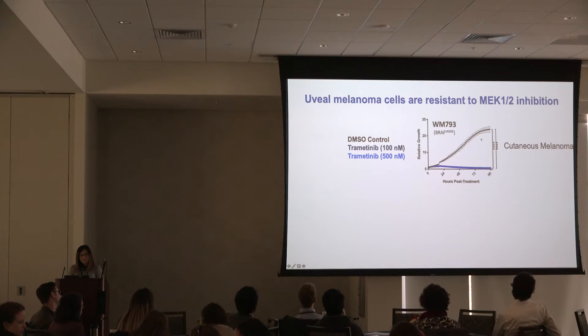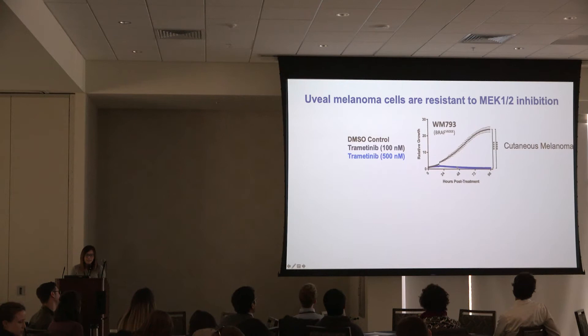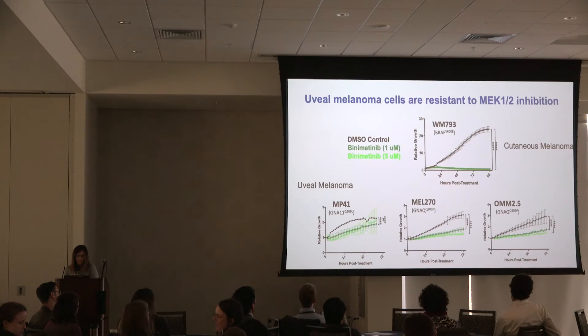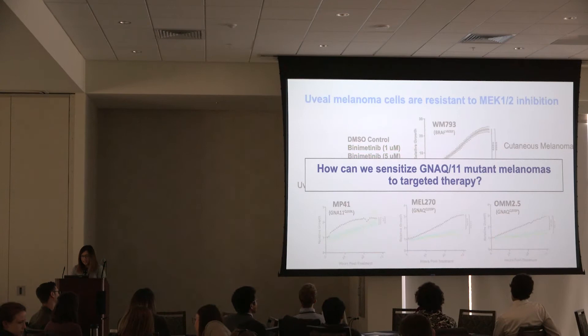These are results from a live cell imaging experiment looking at cell confluence over time. A BRAF-mutated cutaneous melanoma cell line is very sensitive to trametinib — the cells are not growing, confirming sensitivity to MEK inhibition. But when we compare these to multiple uveal melanoma cell lines with either GNAQ or GNA11 mutations, these cells are still able to grow in the presence of trametinib. This resistance was also seen with another FDA-approved MEK inhibitor, binimetinib.